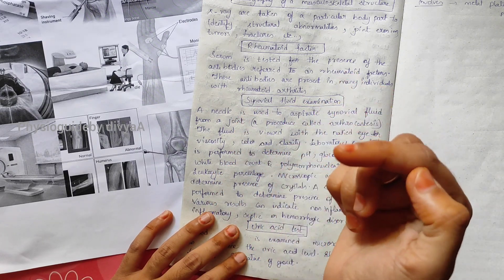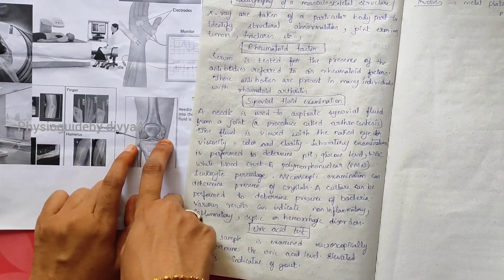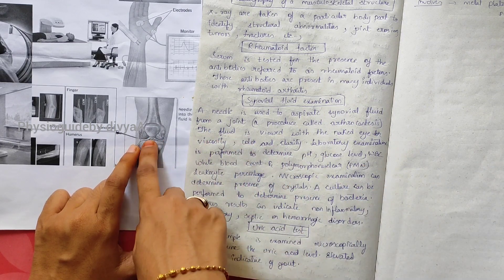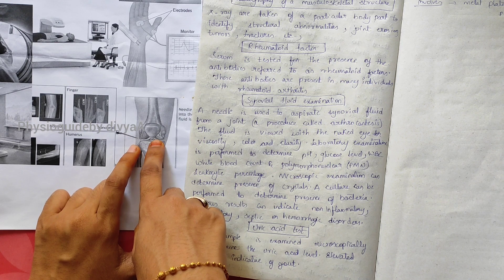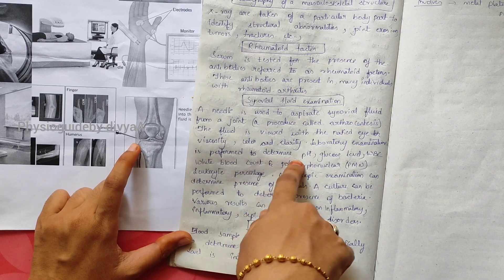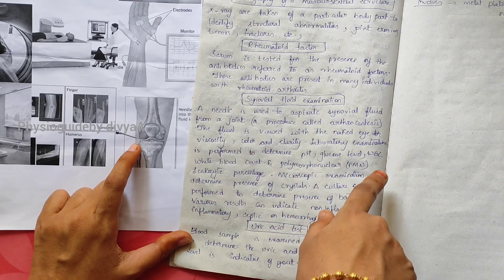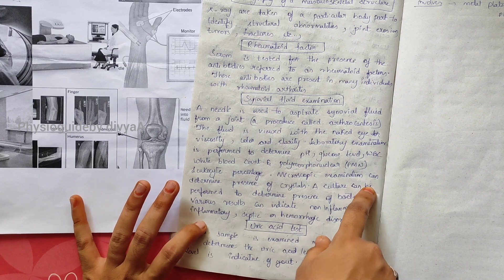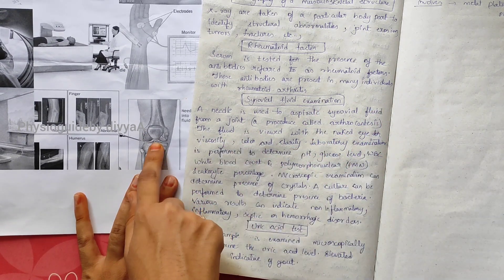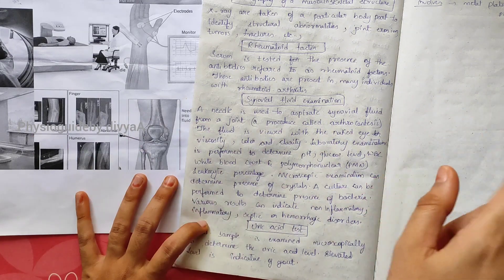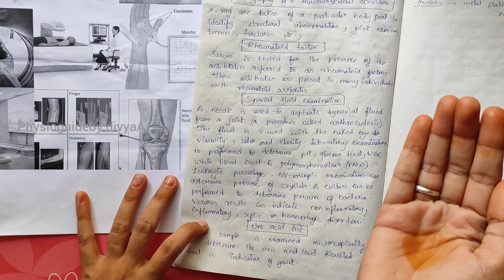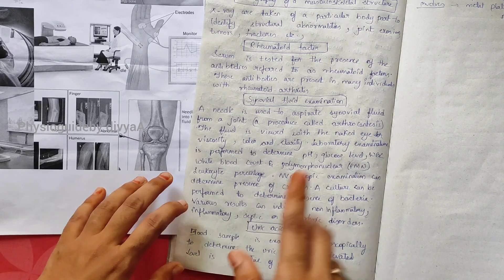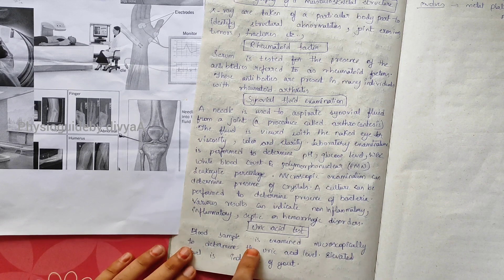Synovial fluid examination: a needle is used to aspirate synovial fluid from a joint. This procedure is known as arthrocentesis. The fluid is viewed for viscosity, color, and clarity. Lab exam is performed to determine pH, glucose level, WBC, and PMN. Microscopic examination can determine the presence of crystals. A culture can be performed to determine the presence of bacteria. Various results can indicate non-inflammatory, inflammatory, septic, or hemorrhagic disorders.